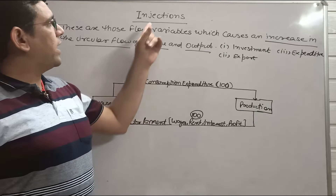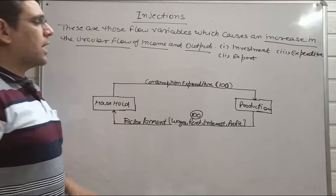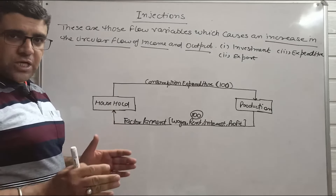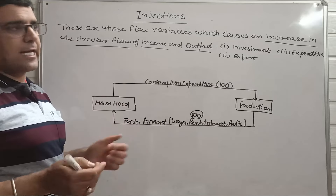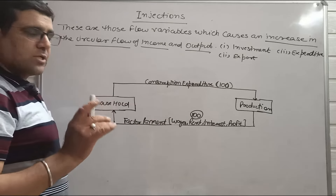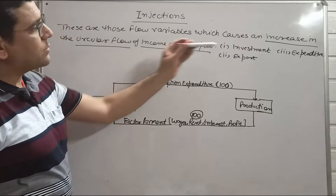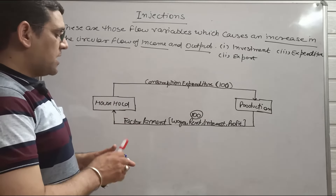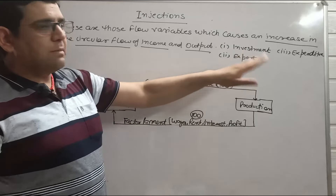These three are injections because they can make your circular flow of income and output bigger. Suppose the circular flow is currently running at 100 rupees and we want to make it bigger. Let us take the example of exports — suppose the economy's exports increase. This means that now you are not producing only for the household sector of your country, but also for the rest of the world.